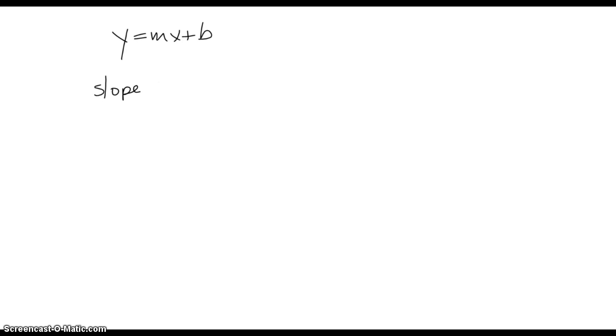for a line with a slope equal to 3 fourths and a y-intercept equal to negative 4, find me the slope-intercept form of the equation for this line. And that's as easy as taking slope and plugging it in for m. So y equals 3 fourths.